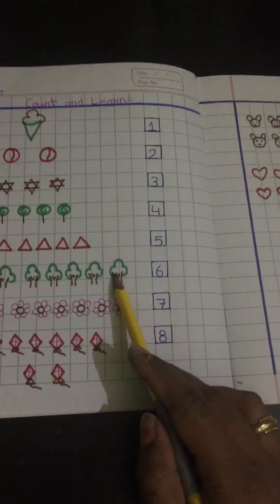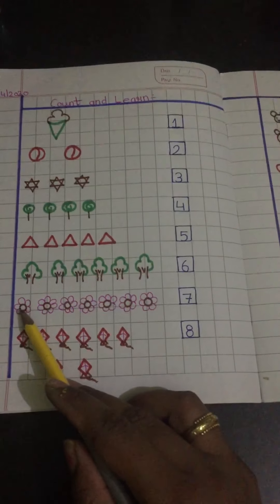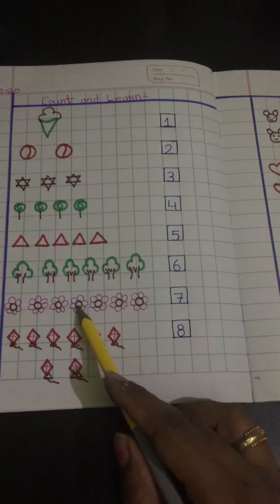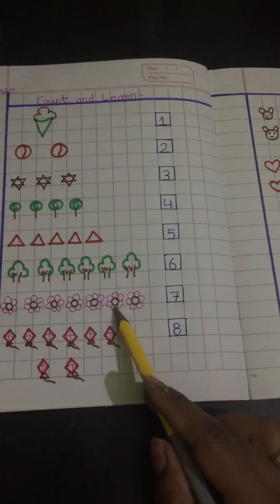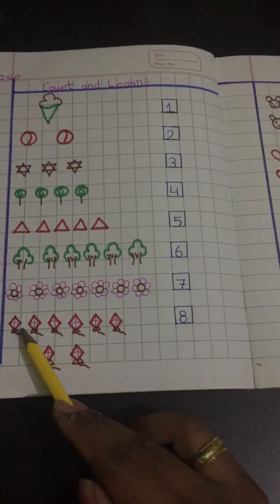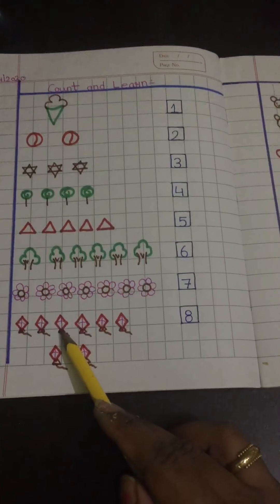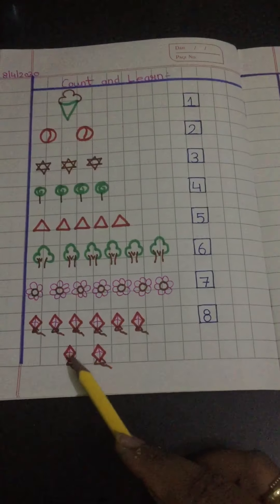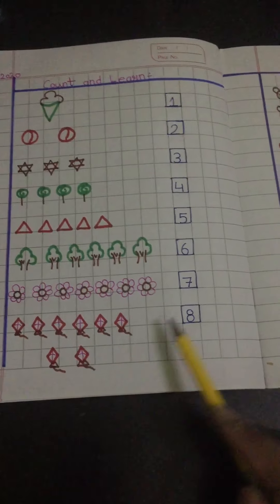Six, six, six. One, two, three, four, five, six, seven. Seven. One, two, three, four, five, six, seven, eight. Eight.